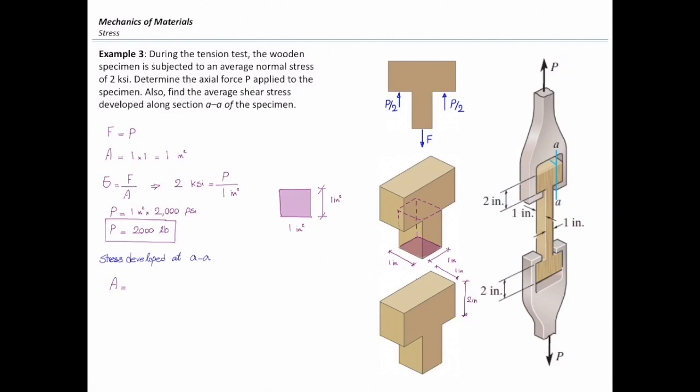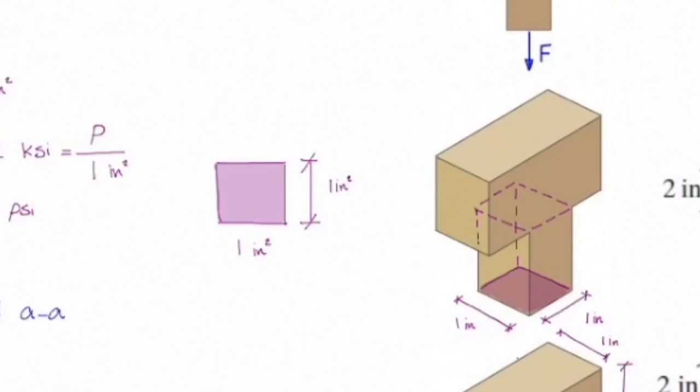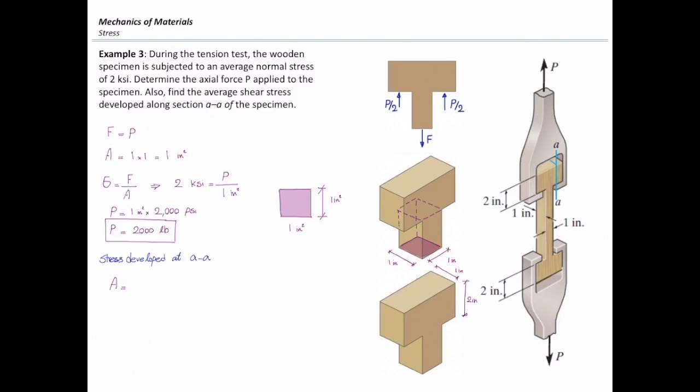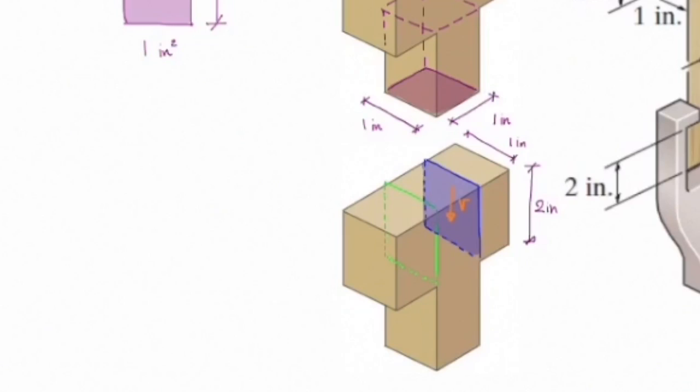First, let me talk about area. What is the area that we should consider in determining the stress at the AA section? Should I consider this one by one section? Nope. What section should I consider? It's the section on the side. I can determine what is area for that. The height of that is two inch. The width is one inch. So, area of that is simply two squared inch.